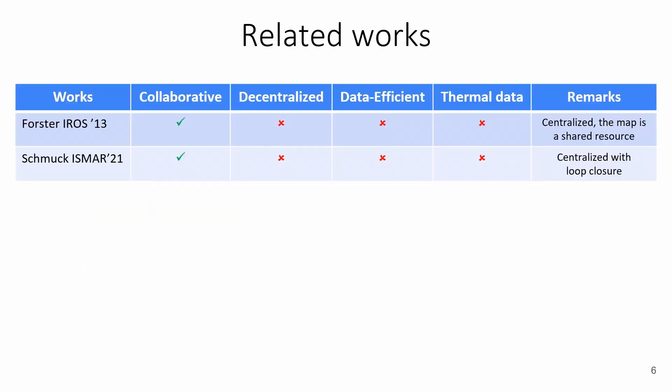Literature on collaborative VIO systems is vast and can be divided between centralized and decentralized methods. The former, like in the works of Forster and Schmuck, is based on a central processing unit designated to fuse the data coming from various agents.